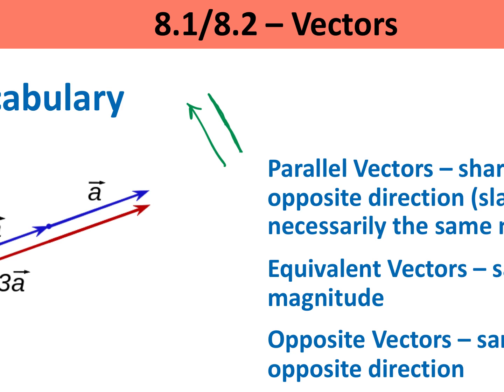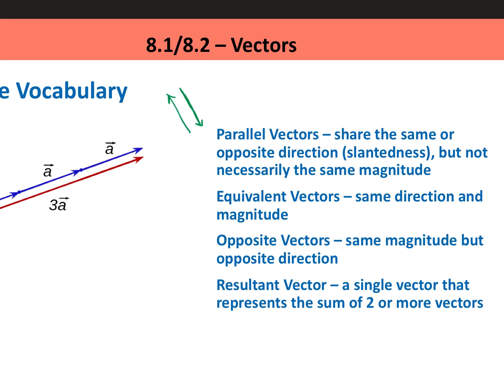Opposite vectors are vectors that are the same length, have the same magnitude, but they go in opposite directions. Looking at these green ones again, if I wanted to make these opposite vectors, they just change the direction and make the other one go the other way. But they still are parallel.